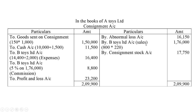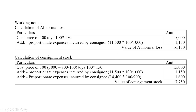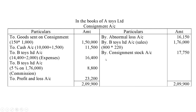Sales entry: B Toys Limited account — 800 toys at Rs. 220 = Rs. 1,76,000. Consignment stock calculation: remaining 100 unsold toys at Rs. 150 = Rs. 15,000, plus proportionate consignor expenses Rs. 1,150, plus proportionate custom duty Rs. 14,400 × 100 divided by 900 = Rs. 1,600. Consignment stock value is Rs. 17,750.